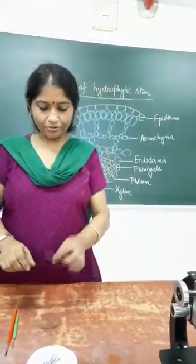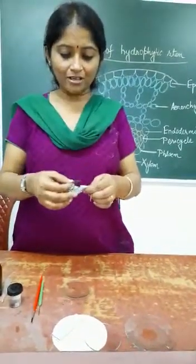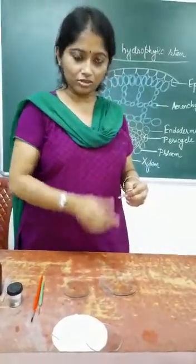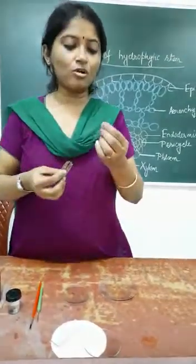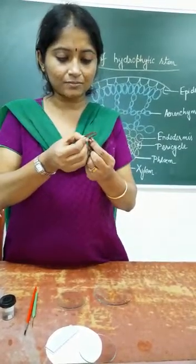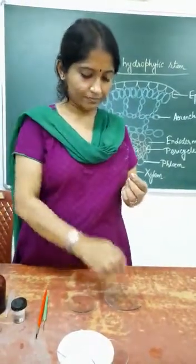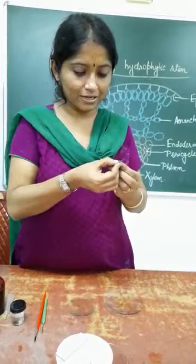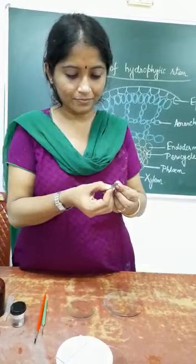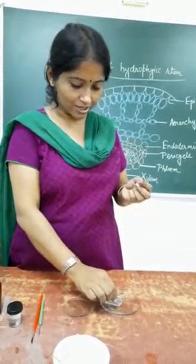Here I have taken the hydrophytic stem. Using a sharp blade I shall make some transverse sections of the stem. In another watch glass I have taken water. We are supposed to hold the stem vertically and make thin sections. By holding the stem vertically I am making thin sections of the stem.